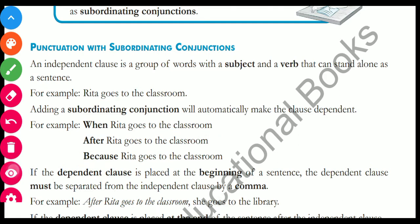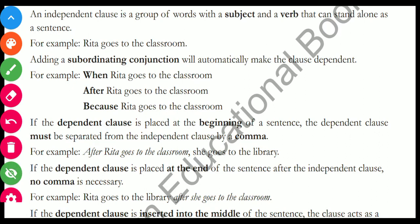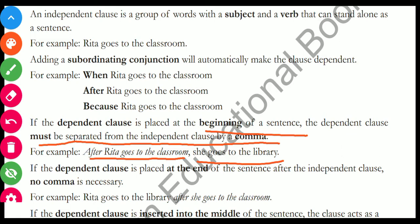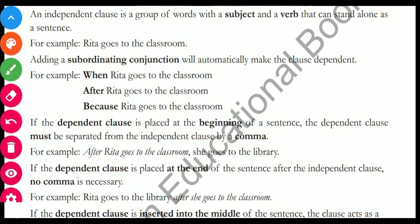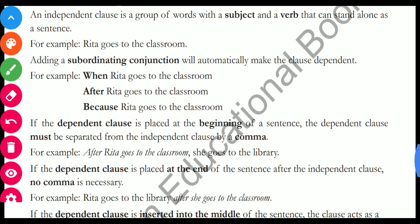If the dependent clause is placed at the beginning of the sentence, it must be separated from the independent clause by a comma. For example, 'After Riya goes to the classroom, she goes to the library.' Here we have a dependent clause at the start. Now we will talk about what happens when the dependent clause is placed at the end of the sentence.